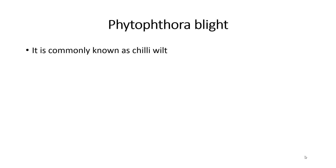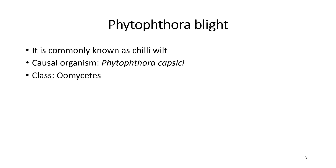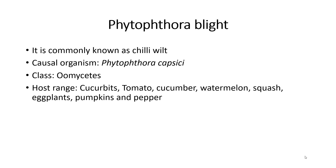Phytophthora blight is commonly known as Chile wilt. It is caused by Phytophthora capsici, which belongs to the class Oomycetes, also known as water mold. It looks similar to fungi but is closely related to brown algae. It affects all cucurbit crops such as cucumber, watermelon, squash, and pumpkin, and solanaceous crops such as tomato, eggplant, and pepper. Some bean varieties have also been reported to be affected by the pathogen.